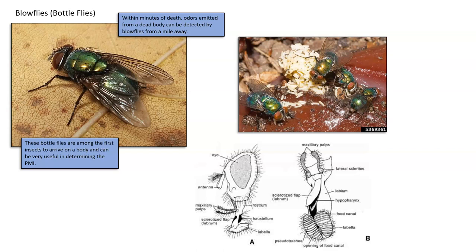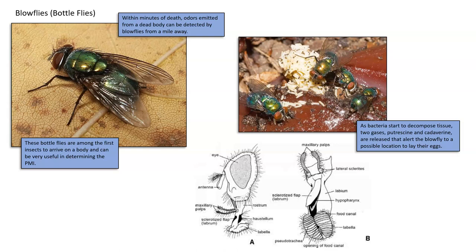As bacteria start to decompose the tissue, two gases — putrescine and cadaverine — are released that alert the blowfly to a possible location to lay their eggs. These are the odors produced by bacteria on decomposing bodies that alert these flies to a corpse, which is where they need to lay their eggs.